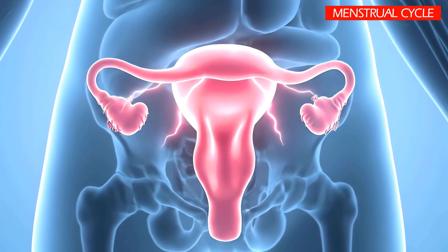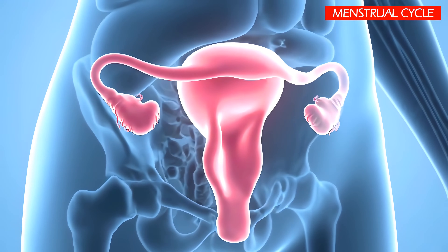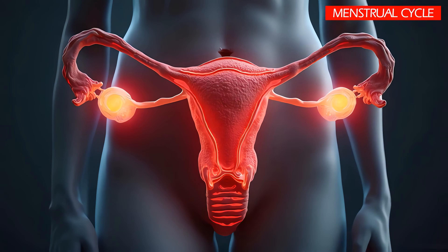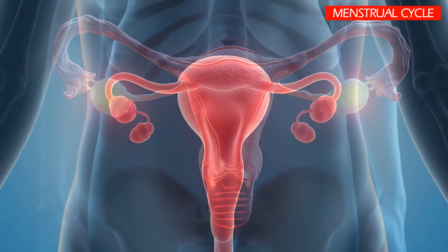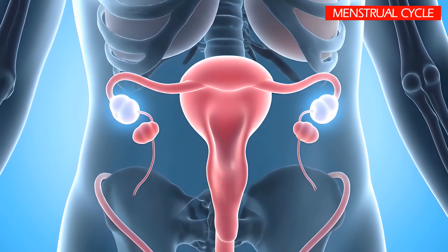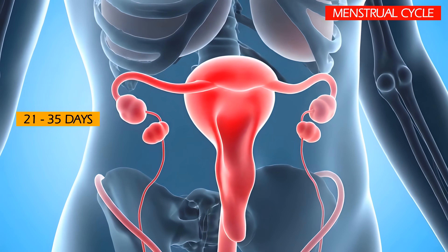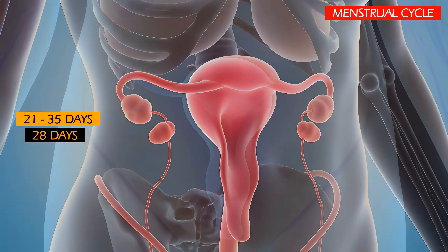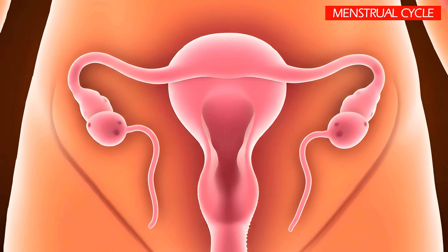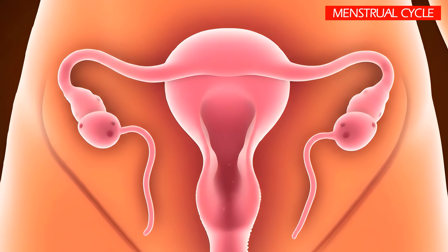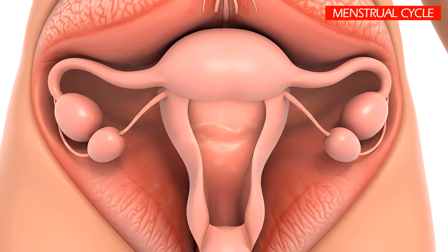The menstrual cycle is a complex and dynamic process that occurs in the female reproductive system each month, preparing the body for the possibility of pregnancy. A typical menstrual cycle lasts between 21 and 35 days, with an average being around 28 days. However, this length can vary, and what's considered normal can range from 21 to 38 days, depending on each individual, their age, and health.